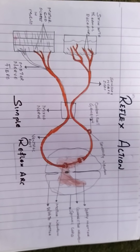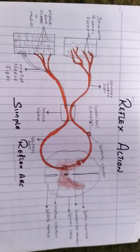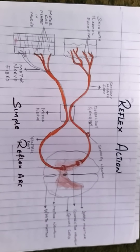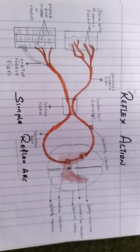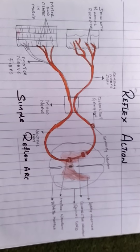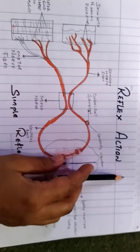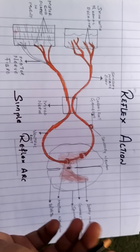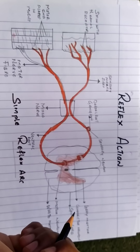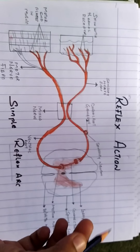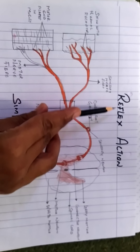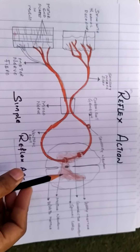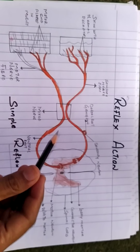Let us see some examples in order to understand in more detail. Removing your hand or finger from a hot object, like a burning candle or anything very hot — as soon as you feel the heat, you immediately take out your hand. That response is given by the reflex action. Another example: blinking of eyes, sneezing, coughing, and shivering — all of these are regulated and the analyzed response is given by the reflex action present in the spinal cord.